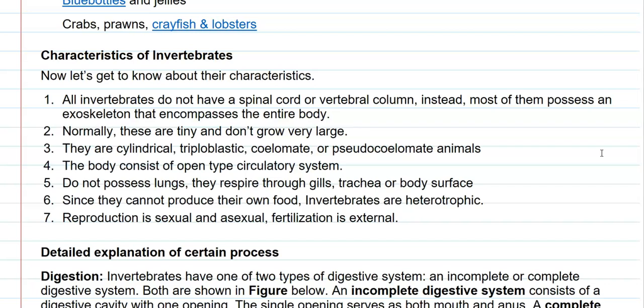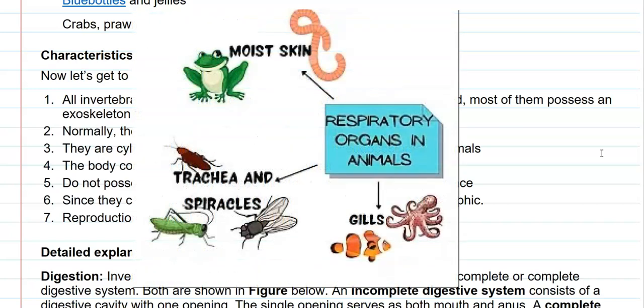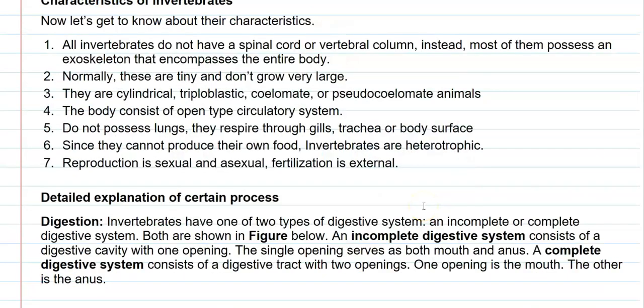Their body consists mainly of an open type of circulatory system. They do not possess lungs and they respire through special structures such as gills, trachea, or sometimes even through body surfaces. Invertebrates do not produce their own food, so they are heterotrophic in nature and depend on pre-formed food or dead organic remains. Reproduction can take place through asexual or sexual means, and usually fertilization is external to the body.